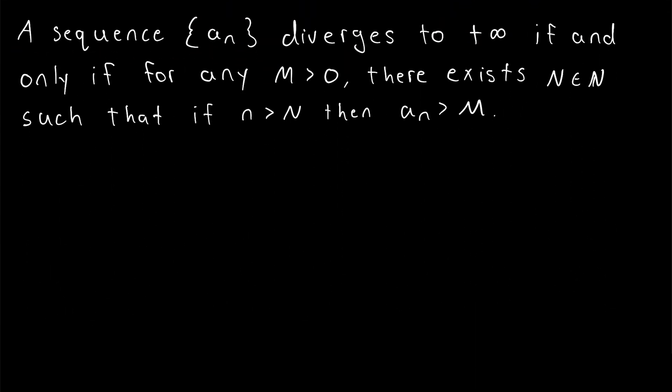A sequence a_n diverges to positive infinity if and only if, for any M greater than 0, there exists some natural number big N,